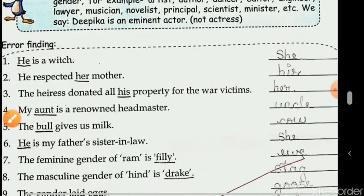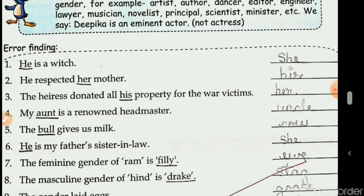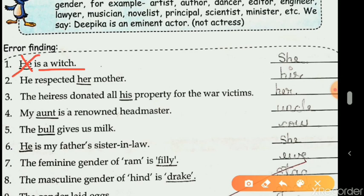Error finding exercise. First: 'He is a witch.' The word 'witch' denotes feminine gender, so we cannot use 'he' with it. This can be corrected in two ways: either write 'she is a witch', or write 'he is a wizard'. If you use 'he', change 'witch' to 'wizard'. If you keep 'witch', change the pronoun to 'she'. He goes with wizard; she goes with witch.